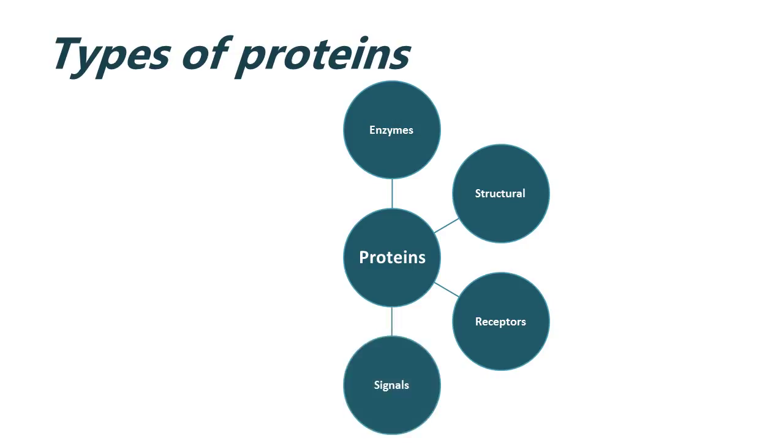And this links quite closely with signals. Now the signals that receptors bind to can be quite varied, but they can also be proteins. A good example of this would be insulin. Insulin is a signaling molecule. And these signals bind to receptors, and then the receptors relay that activity down, which ultimately leads to a change in behavior from the cell.